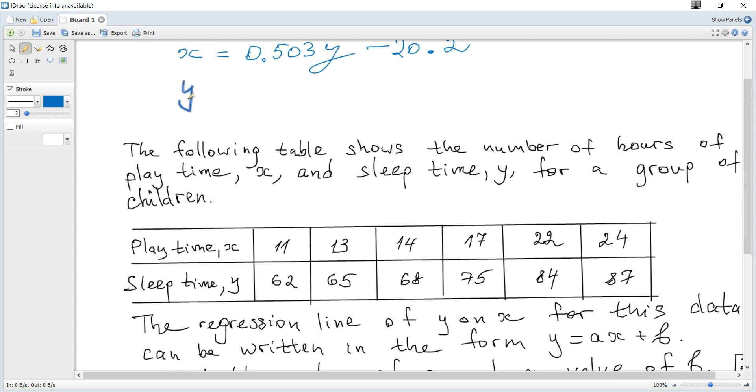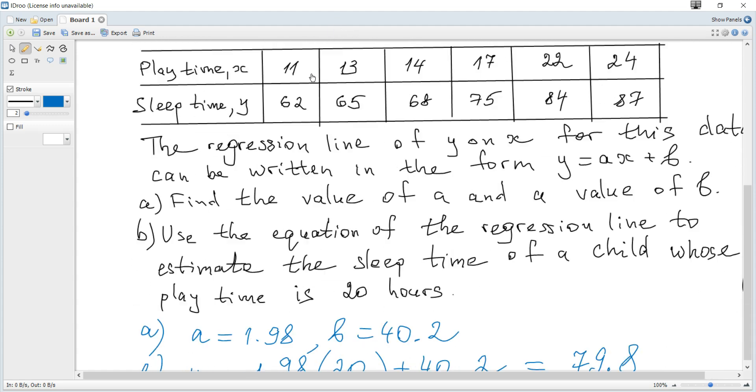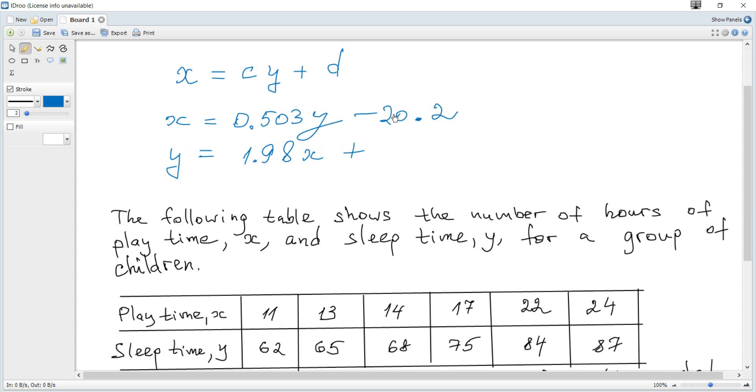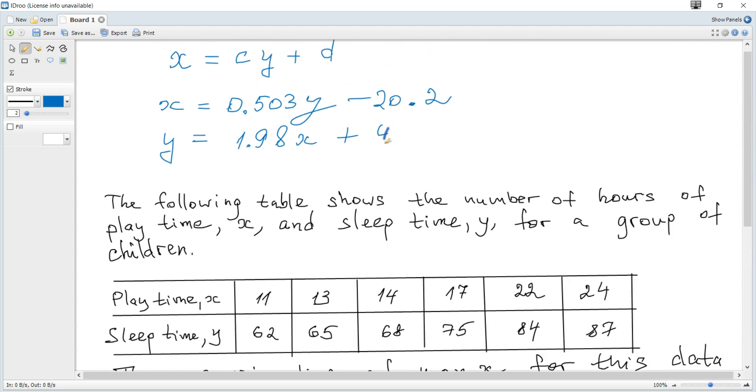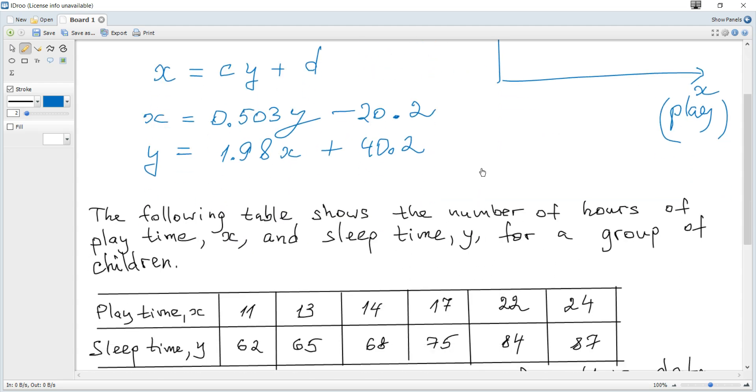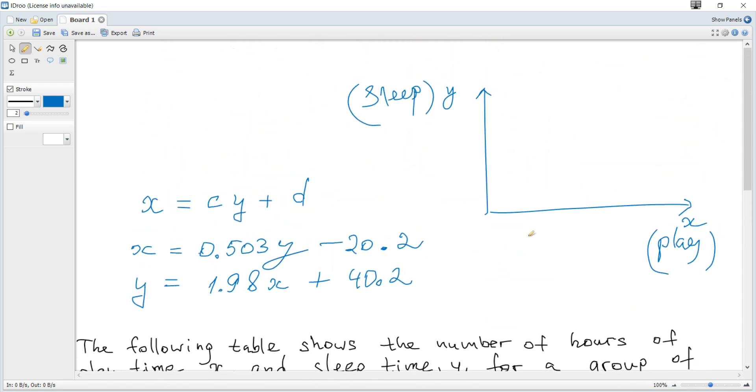And y on x looks like this. So this is 1.98x plus 40.2. And if you plot two lines on the same coordinate system. Let y be here, which is sleep time. x is playtime. And plot line as usual for y on x. Just when x is 0, it's 40.2. And another point, for example, 1 is 42. So it's some increasing line. It's y on x line.